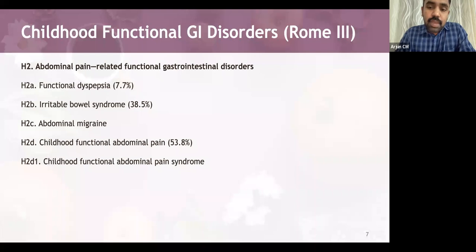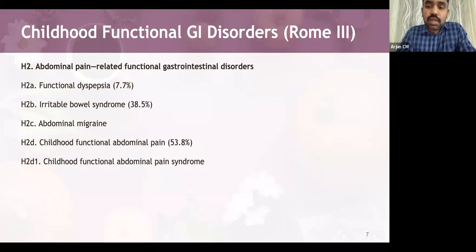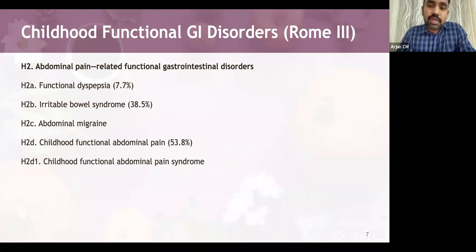Functional dyspepsia involves persistent or recurrent pain or discomfort centered in the upper abdomen — above the umbilicus — not relieved by defecation and not associated with a recent change in stool frequency or form. In irritable bowel syndrome, there is abdominal discomfort with improvement upon defecation and a recent onset change in stool frequency and form or appearance. All these functional GI disorders have no evidence of inflammatory, anatomic, metabolic, or neoplastic processes.